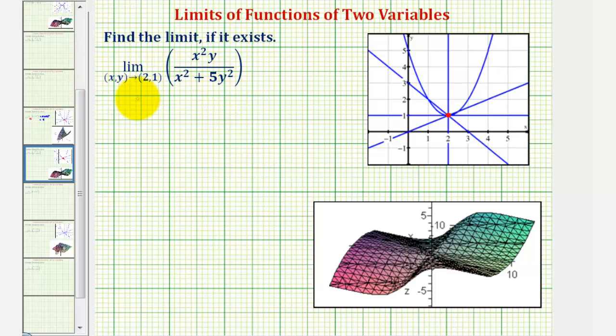So we would have 2² times 1 in the numerator divided by the quantity 2² + 5(1)². So simplifying, we have 4 divided by 4 + 5 or 9. So here the limit equals 4/9.